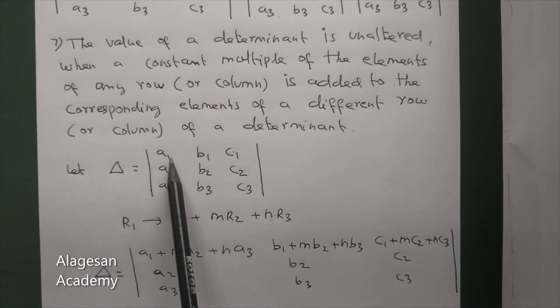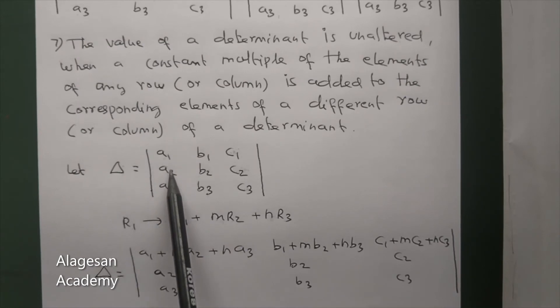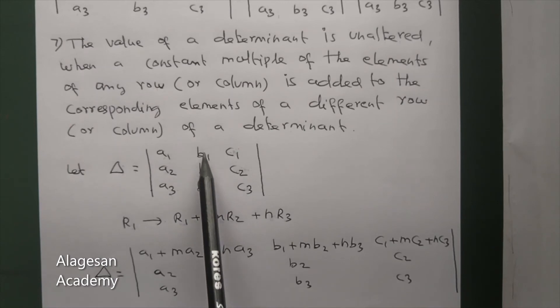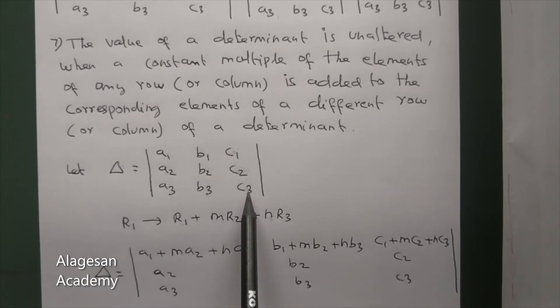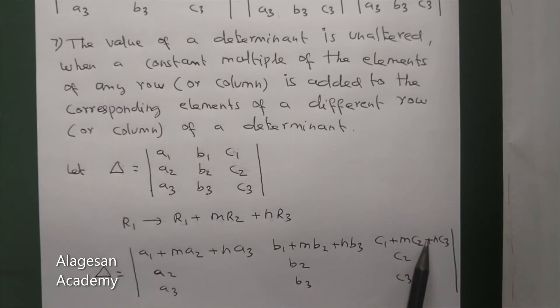Then add these elements to the first row elements. What you get is: a1 plus ma2 plus na3 as the first element. Then b1 plus mb2 plus nb3 as the second element. Then c1 plus mc2 plus nc3 as the third element.